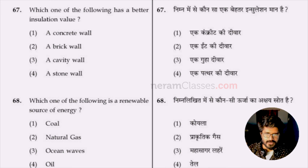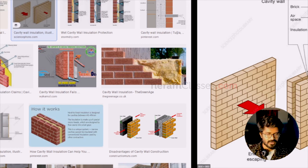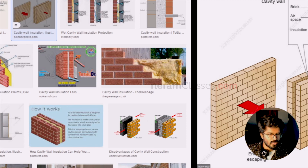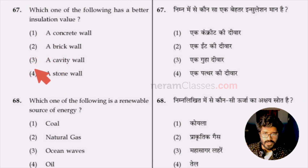Question 67: which has better insulation value — concrete wall, brick wall, cavity wall, or stone wall? The answer is a cavity wall. A cavity wall has an air gap between two walls, making it difficult for energy to transfer from one side to the other. You can also add insulation material inside the cavity for additional benefit. Cavity walls provide more insulation than concrete, brick, or stone walls.